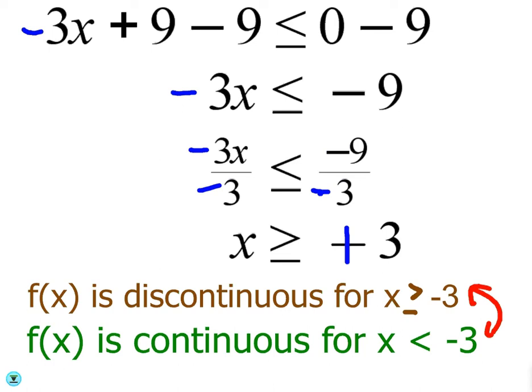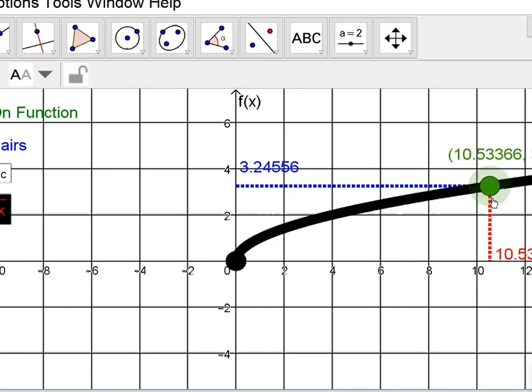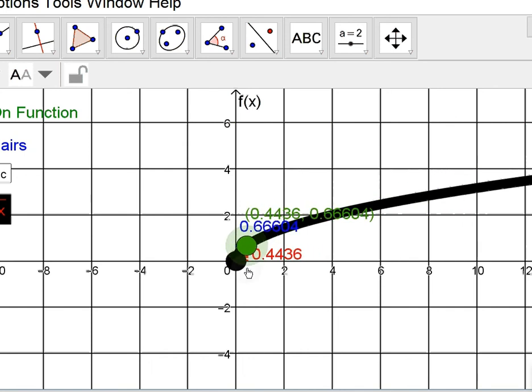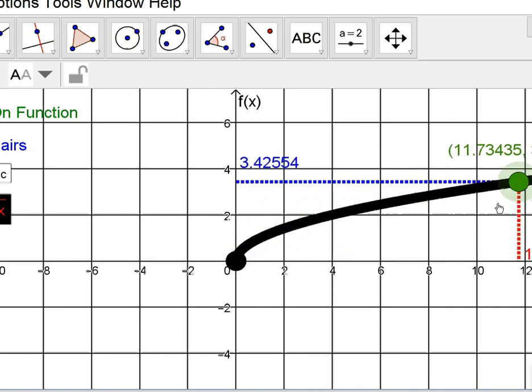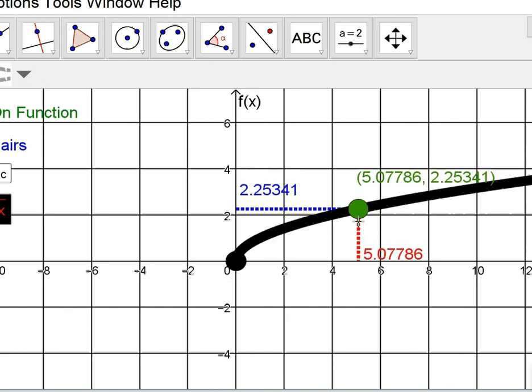Let me see if I have a graph. This is not the actual graph, but you can kind of see what an even root function looks like. Notice that it's going to be continuous whenever x is greater than or equal to zero. But at zero, and of course, anything less than zero, there is no graph, so it's going to be discontinuous.